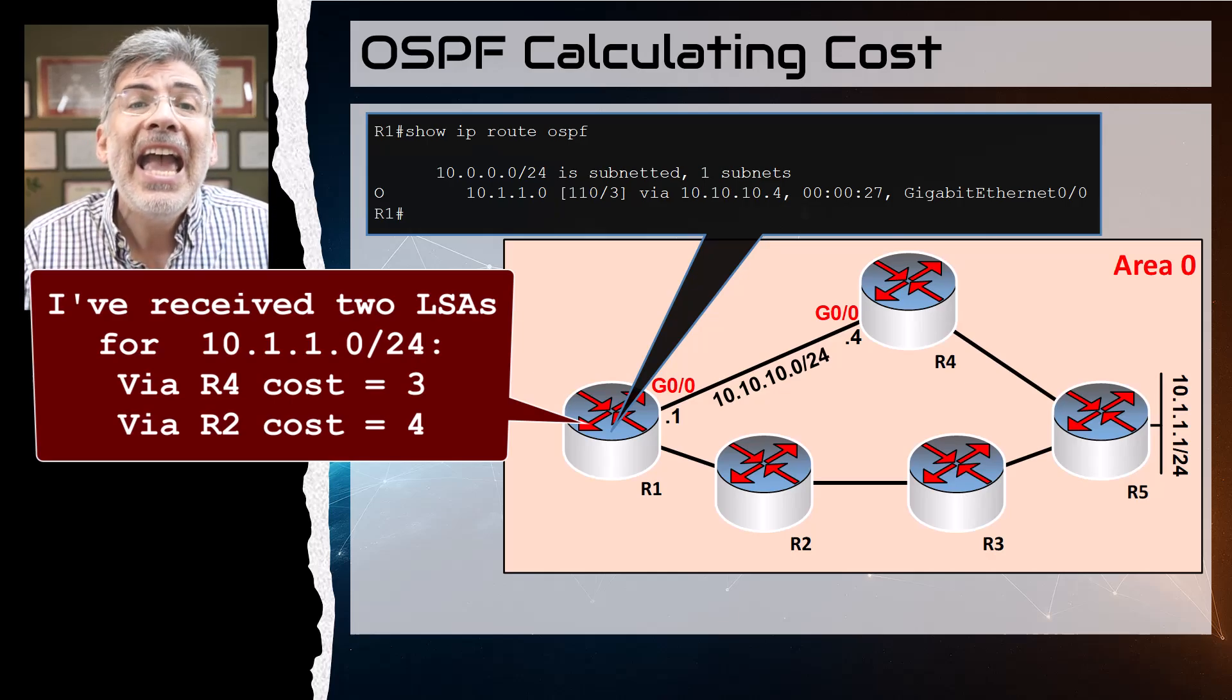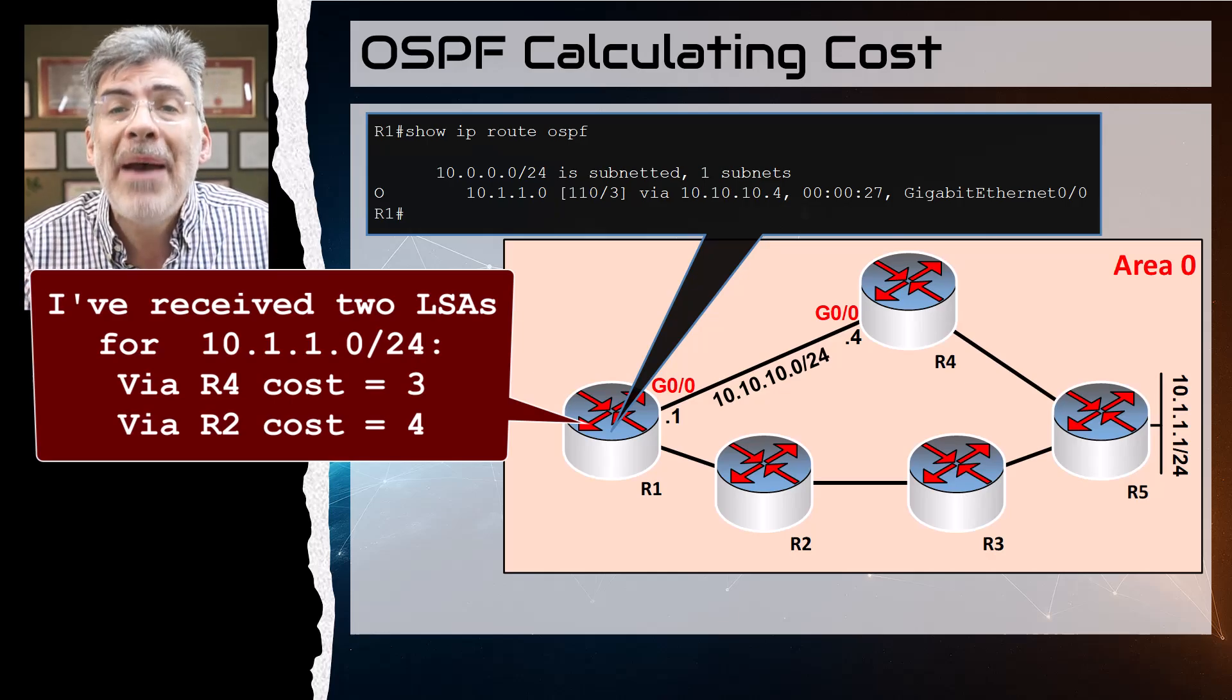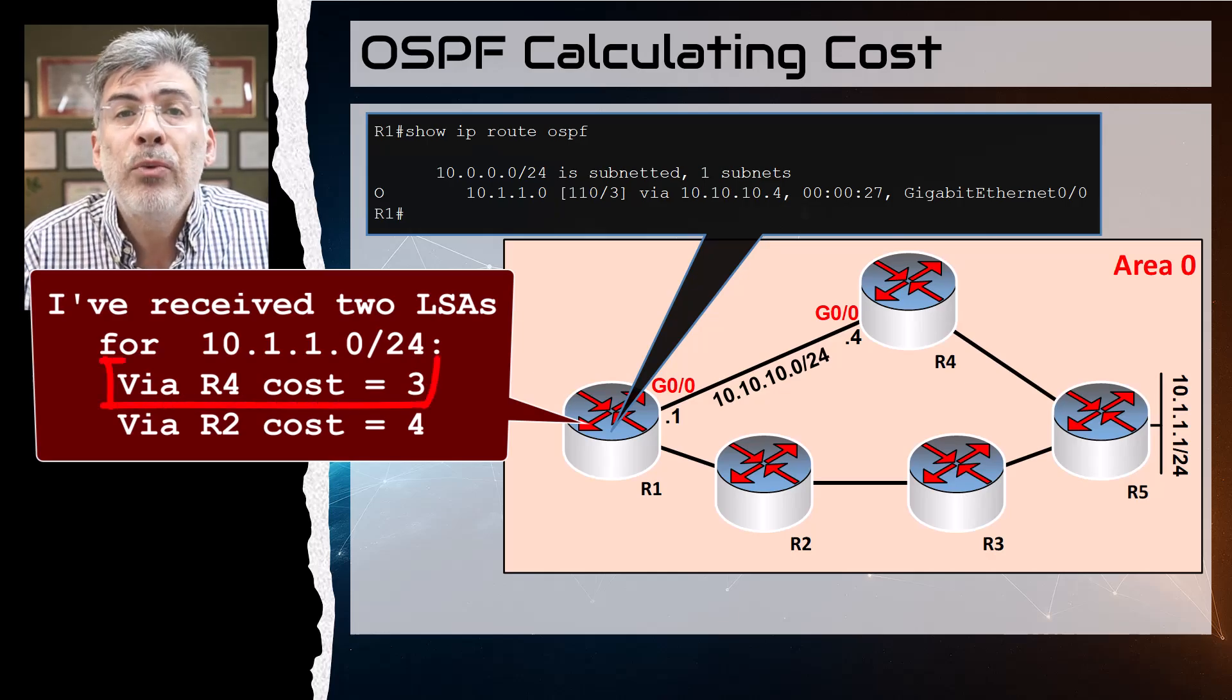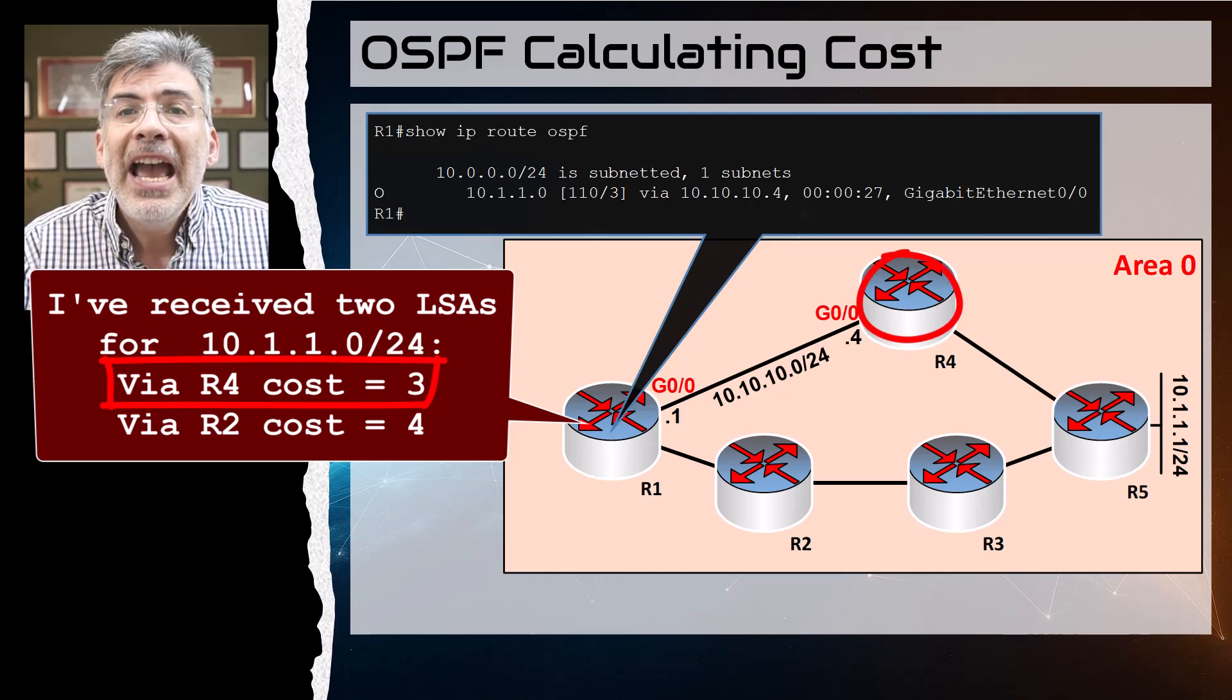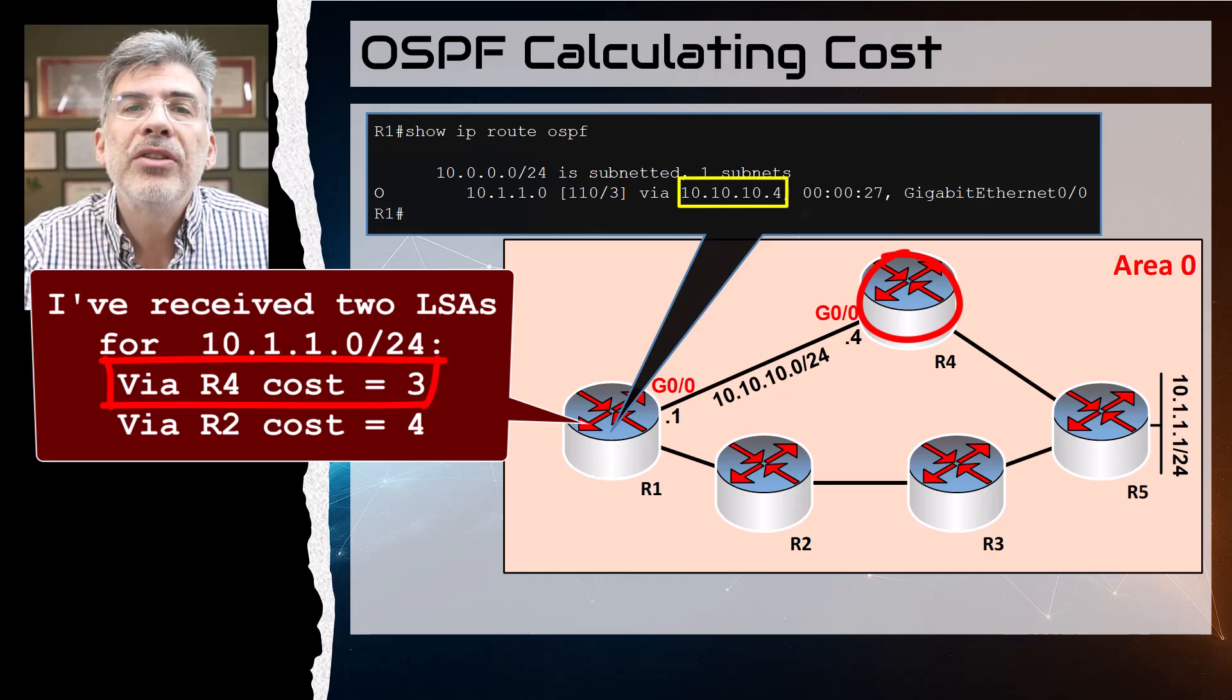And it chooses the path with the better metric, that is the path with the lower cost, to be placed in the routing table. That path is via R4, and that's why we see that in R1's routing table with a cost of three.